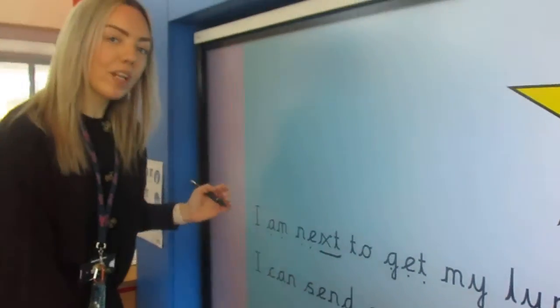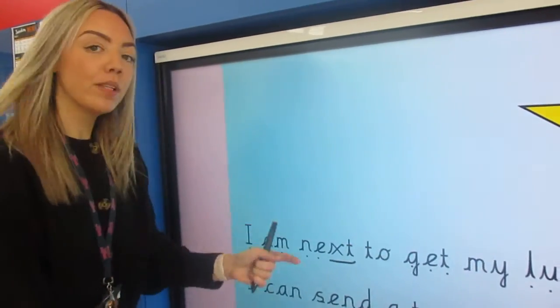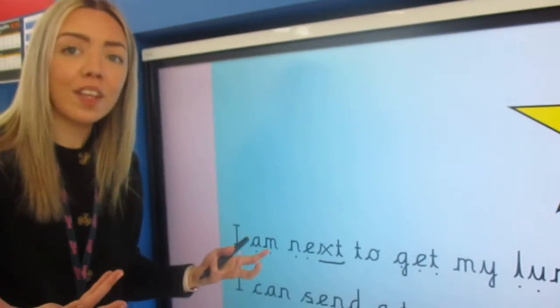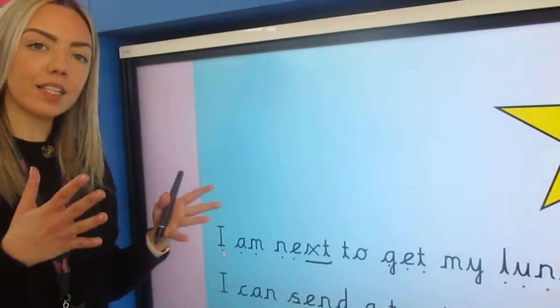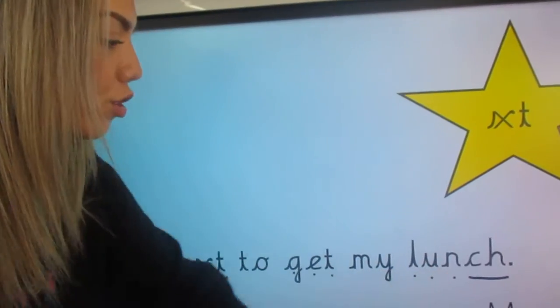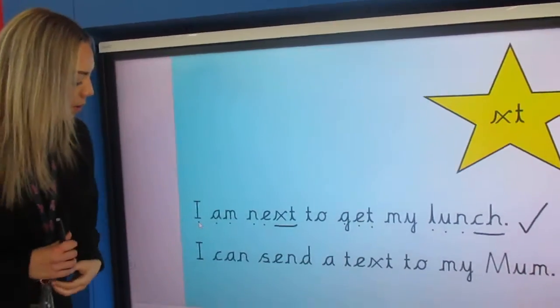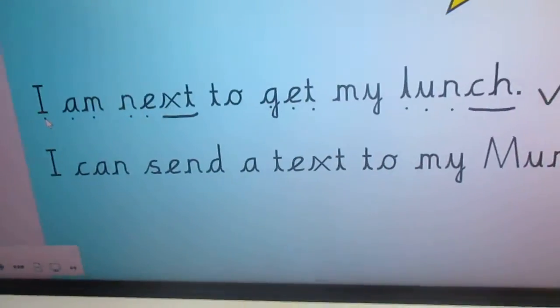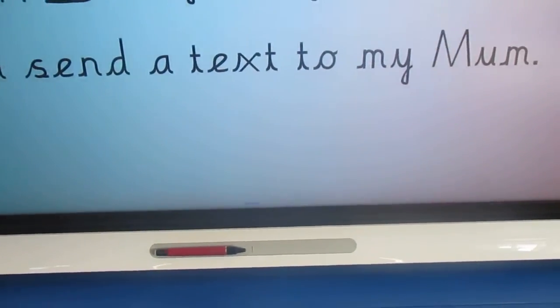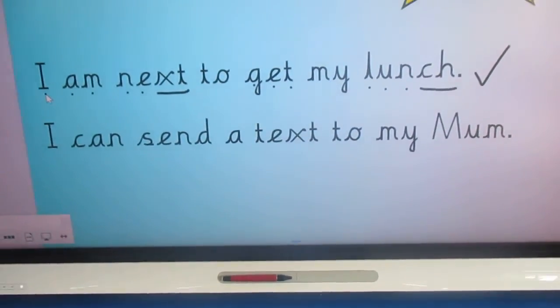So now we'll go back and read it as a whole sentence. As you read each word you will remember them by sight and that's how we get faster at our reading. So let's have a go together: I am next to get my lunch. Good job, big tick at the end. So I want you now to have a go at reading my second sentence and then your adult can record you. I want to hear that chopping and that blending. So pause the video now and have a good go before we move on to our last activity.